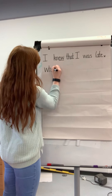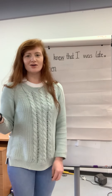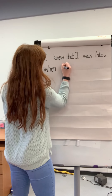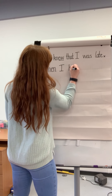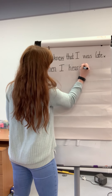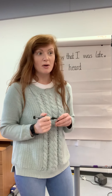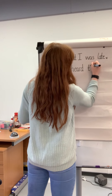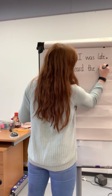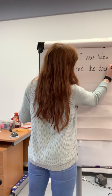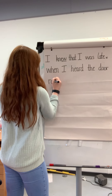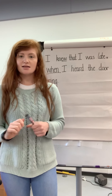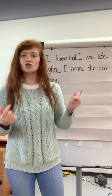Now we're going to extend our sentence using the conjunction 'when'. 'I knew that I was late when...' Think about how you can extend that sentence — at what point did I know I was late? Maybe when I looked at my watch, or when my alarm went off the fifth time. For example: 'I knew that I was late when I heard the doorbell' — maybe I was supposed to be at school on time but I slept in and my mum rang the doorbell. We make sure our letters are all the same size. Think about using the conjunction 'when' to extend the sentence, or challenge yourself with other conjunctions.